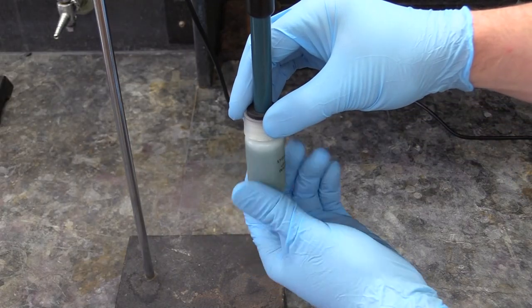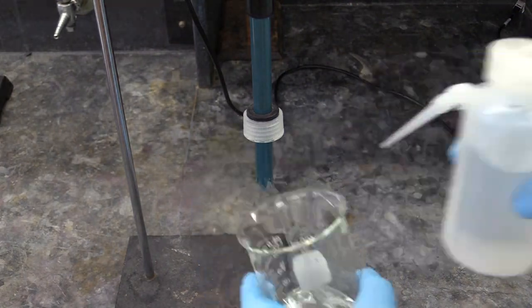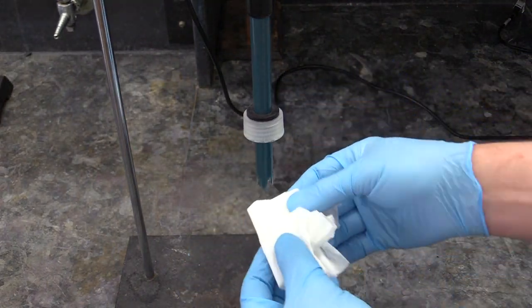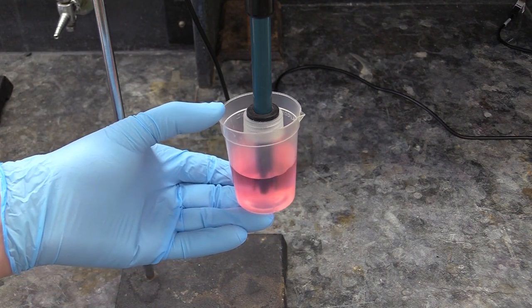After you've done that, unscrew the storage solution bottle from your probe, rinse it off with some DI water, use a chem wipe to get the excess water off it, and immerse the probe's tip into the red pH 4 calibration solution.